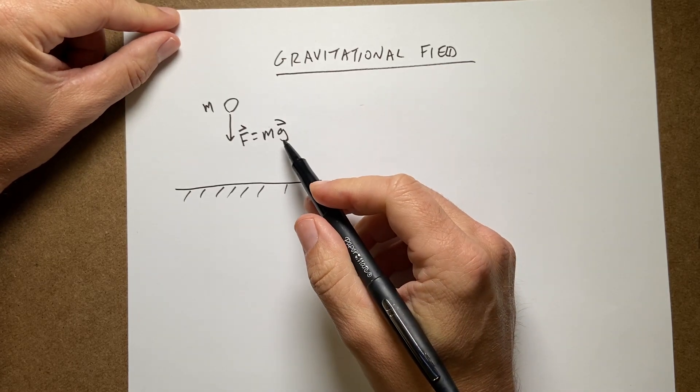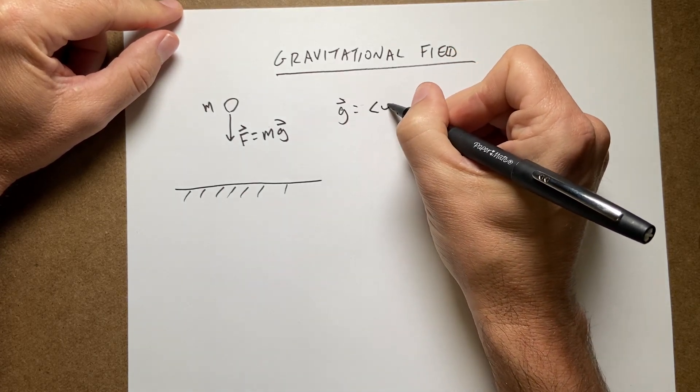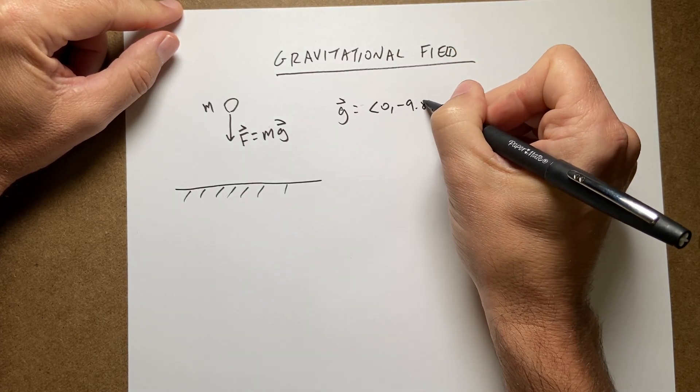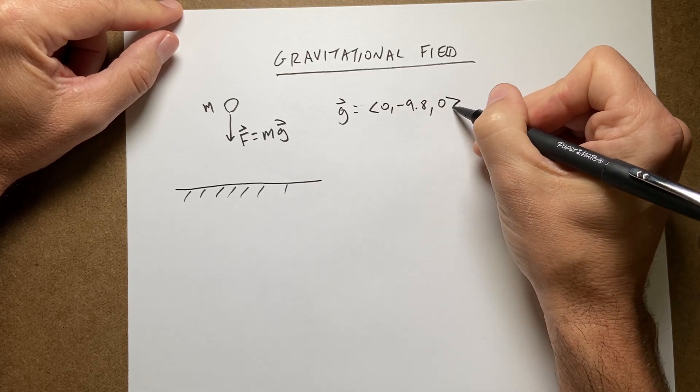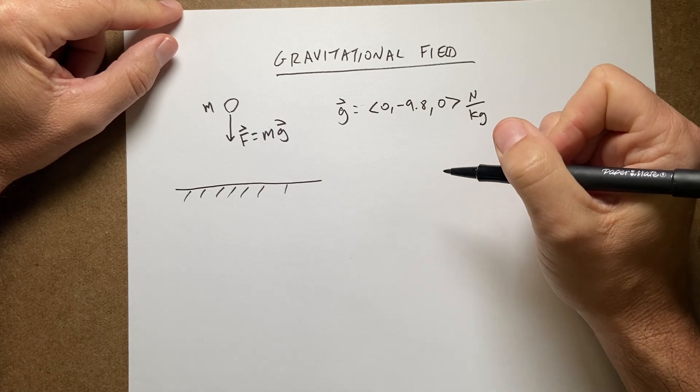g is the gravitational field. On the surface of the earth, g is the vector (0, -9.8, 0) newtons per kilogram. That is the gravitational field.